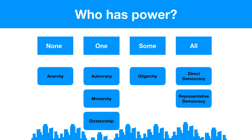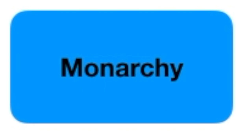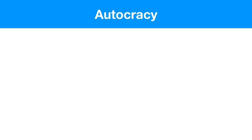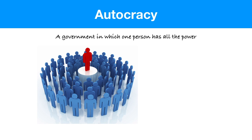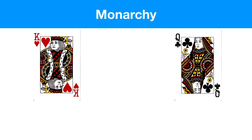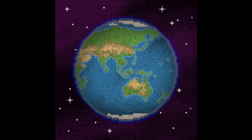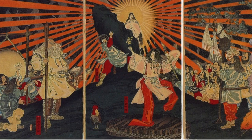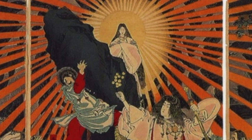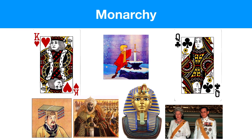Now that we've covered when no one is in charge, we're talking about when one person is in charge. There are three things in that category: autocracy, monarchy, and dictatorship. An autocrat is when one single person rules and has all the power. The monarchy is one example — the monarch is a single ruler who often gets their power from some kind of divine source, which is true in almost every culture.